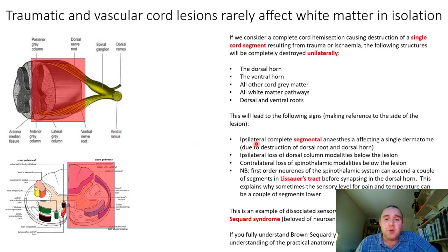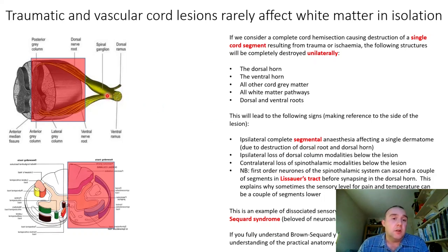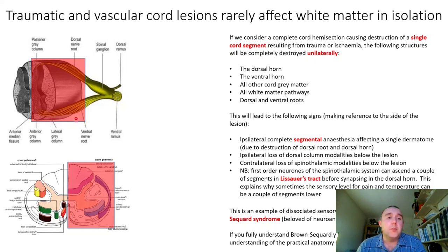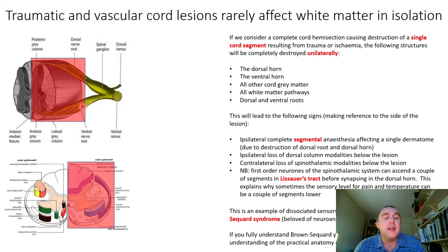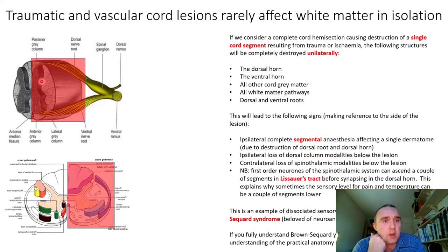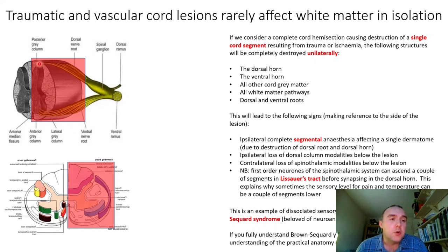First, we would get ipsilateral complete segmental anaesthesia affecting a single dermatome — because we have destroyed the input into the spinal cord segment as well as the dorsal horn. The sole dermatome supplied by this spinal nerve would be rendered completely anaesthetic to all modalities, both spinothalamic and dorsal column modalities. Second, we would lose dorsal column modalities ipsilaterally below the lesion, because the dorsal columns run along the ipsilateral side of the cord.